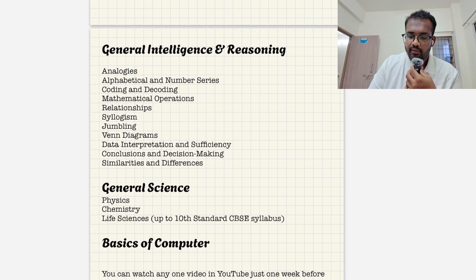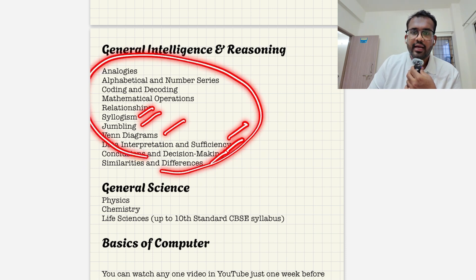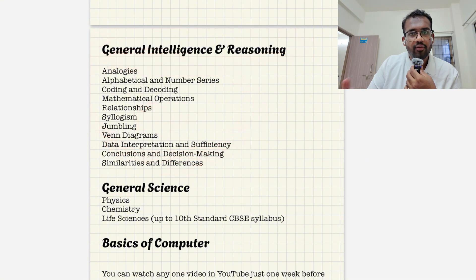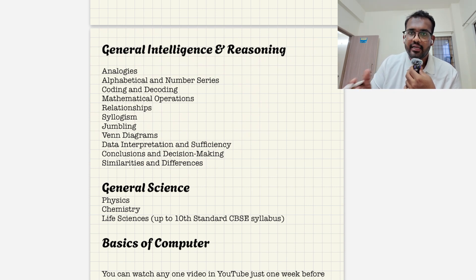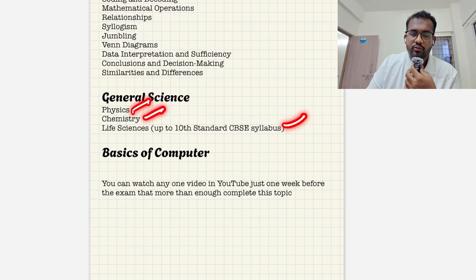Then comes general intelligence and reasoning. Topics include analogies, alphabetical and numbering series, coding-decoding, mathematical operations, relationships, syllogism, jumbling, Venn diagrams, data interpretation, conclusions, decision making, and similarities and differences. For this section you need to practice a lot of MCQs — just studying theory won't help. The more questions you practice, the better you can crack it.